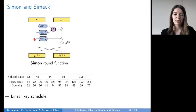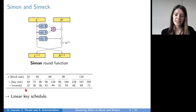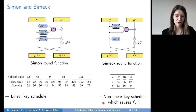In a more graphical way, Simon works as follows: there is a rotation of 8 bits to the left, a rotation of 1 bit to the left, both are ANDed bitwise, and the result is XORed to the right part. This is the non-linear part, and there is also a linear part composed of a left rotation of 2 bits. There are 10 sets of parameters for Simon with different block size, key size, and number of rounds, and the key schedule is linear. For CIMEC, the rotation amounts are 5, 0, and 1. There are only three sets of parameters, the key size always equals the block size, and CIMEC has a non-linear key schedule which reuses the round function f.